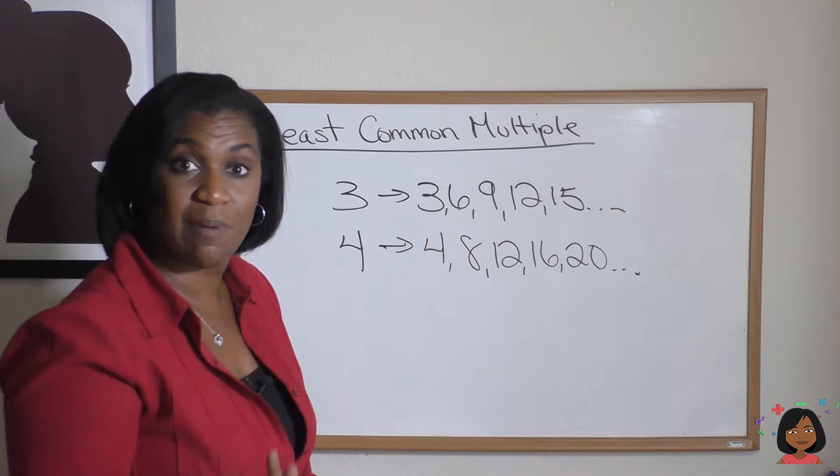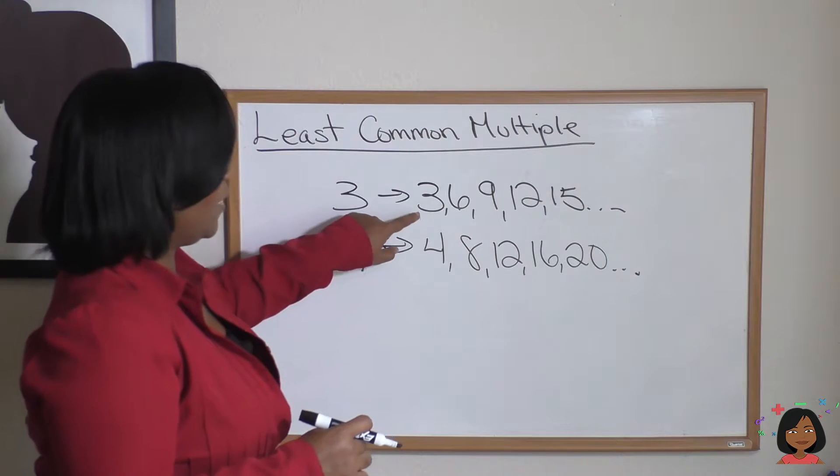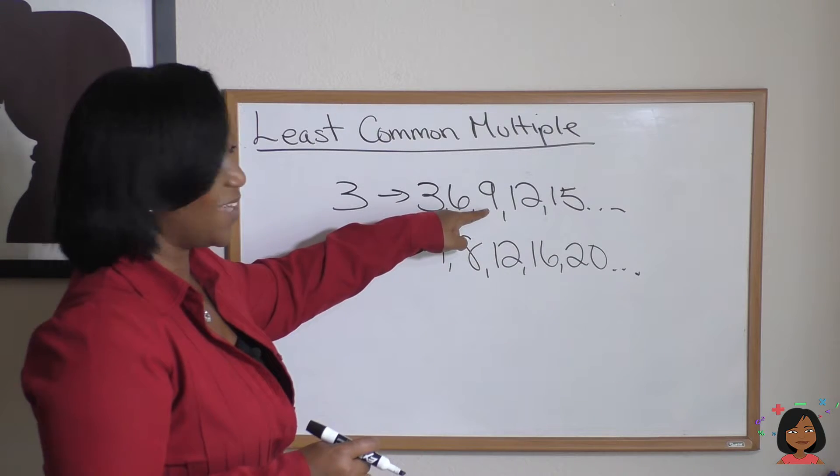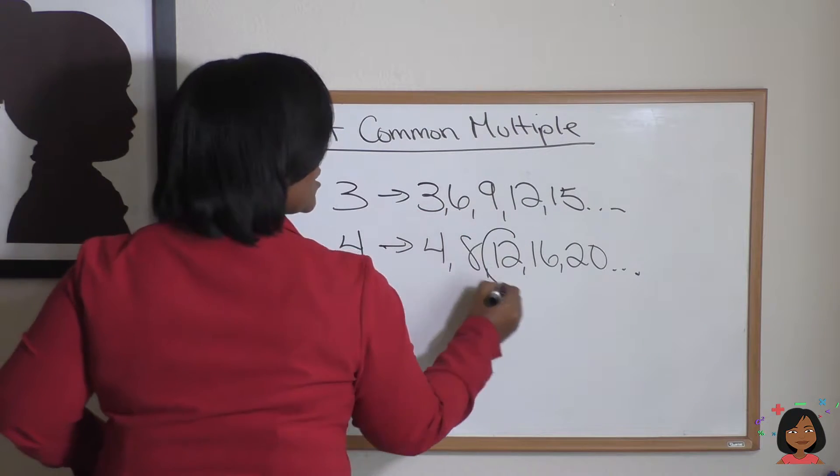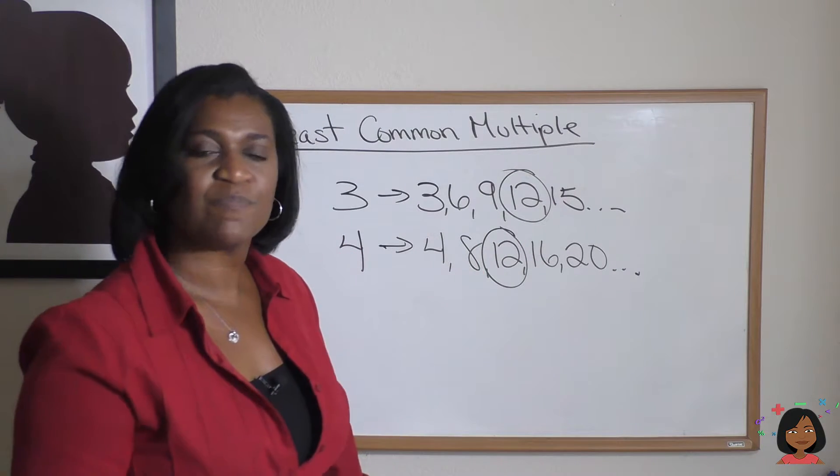Nope, not the three. No four. No six. No eight. No nine. But look, it's the twelve! The twelve is the first one that appears in both of the lists, so it's the least common multiple.